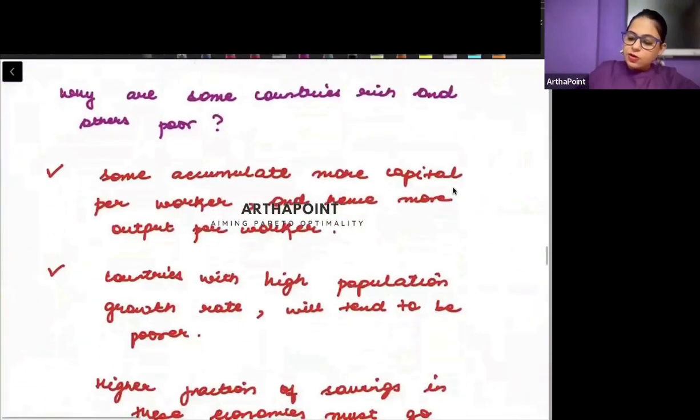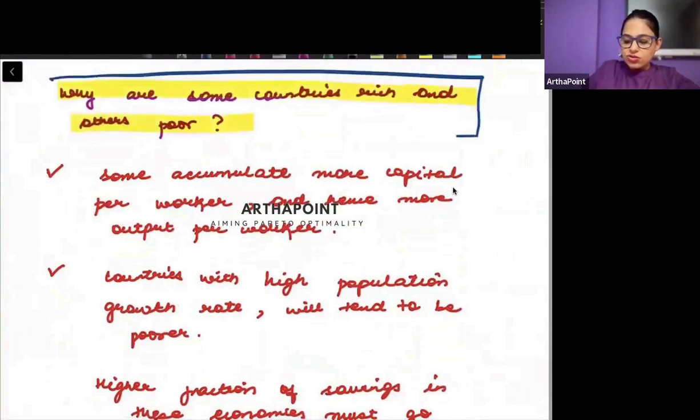Okay. Now, one question arises. Why are some countries rich and other countries poor? Aisa kiyo hai ki kuchh countries rich hain aur kuchh countries poor hain. Right.